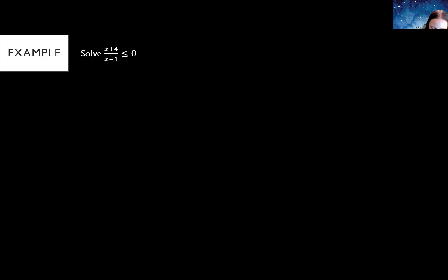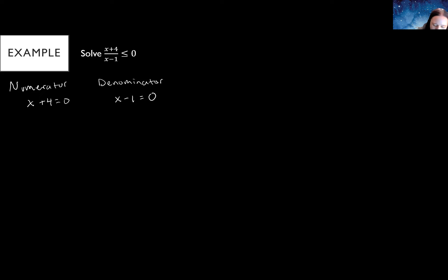So you take the numerator and set that equal to zero: x + 4 = 0. Then you set your denominator equal to zero: x − 1 = 0. You solve both of those for x because these give us our points of interest. For the numerator, subtract four from both sides, which gives x = −4. For the denominator, add one to both sides, giving x = 1. You take your top and bottom, set them equal to zero, and solve.